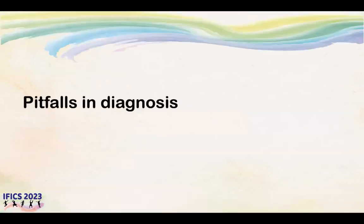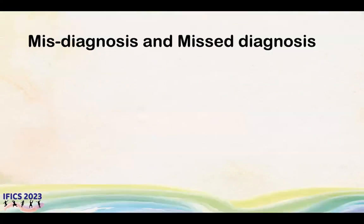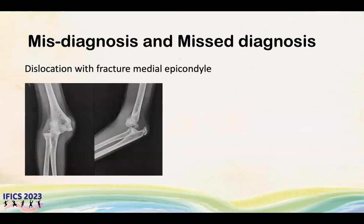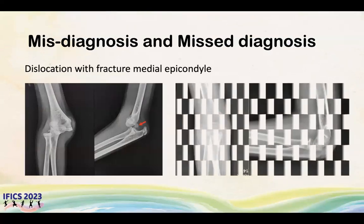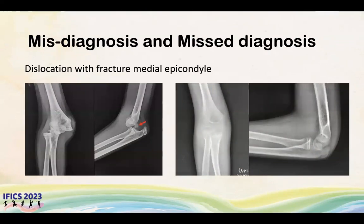Pitfalls in diagnosis of medial epicondyle can be tricky in two scenarios mainly. The first is elbow dislocation occurring in association with the fracture medial epicondyle. You can see this is an elbow dislocation with a medial epicondyle fragment. The first step in management is closed reduction of the elbow dislocation. However, at times the fragment gets incarcerated into the joint, and if the surgeon is not vigilant, this can be missed.